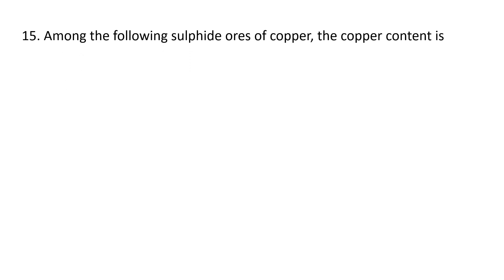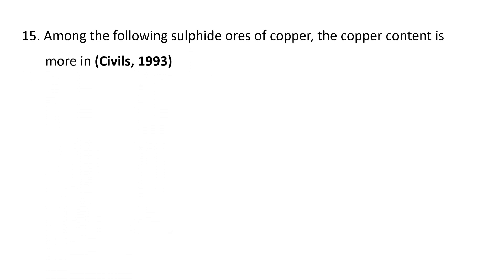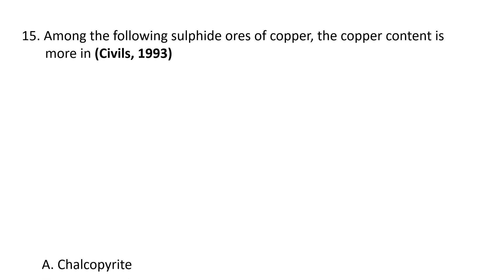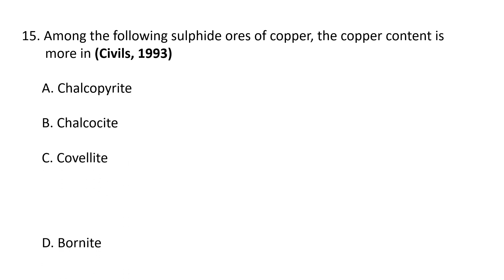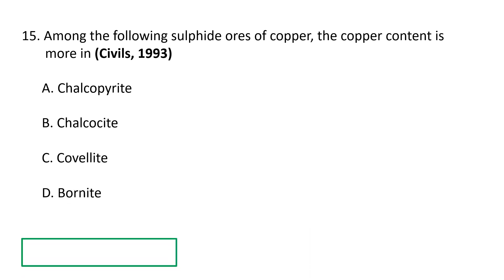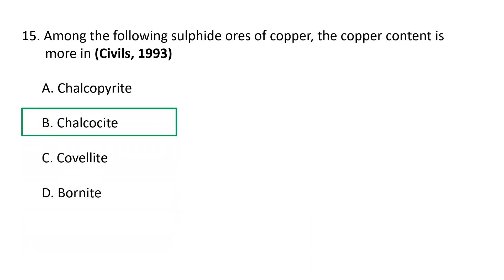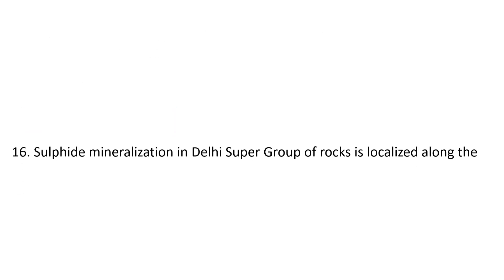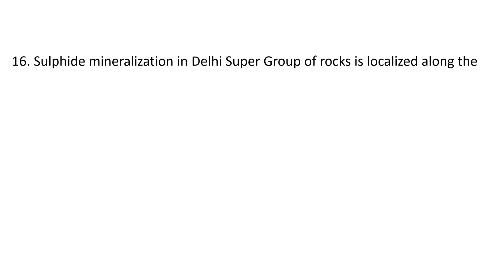Next question: Among the following sulfide ores of copper, which one contains the highest copper content? A. Chalcopyrite, B. Chalcocite, C. Covellite, D. Bornite. Chalcocite contains the highest copper content compared to other sulfide ores, so B is the correct answer.